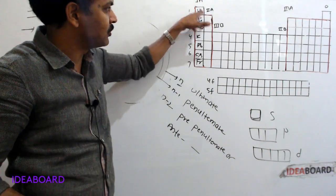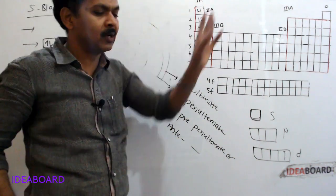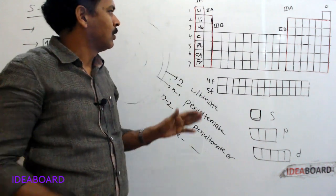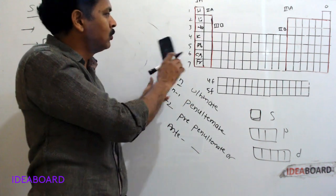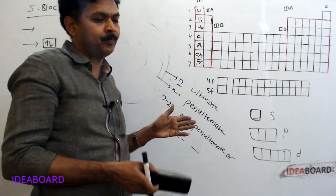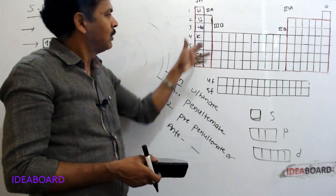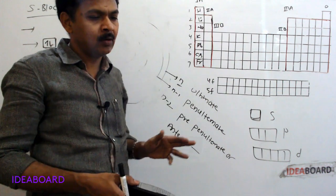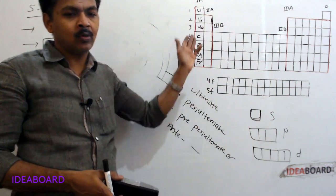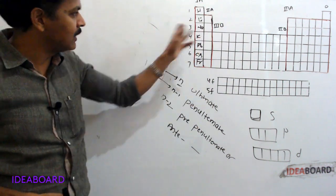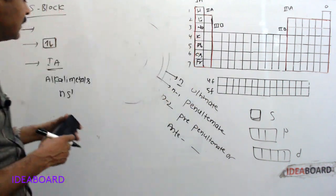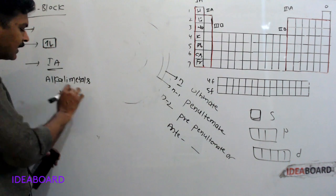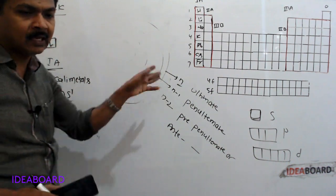For example, hydrogen is 1s1, lithium is 1s2, 2s1, and sodium is 1s2, 2s2, 2p6, 3s1. So the general valence orbit electronic configuration for first A group elements is Ns1.